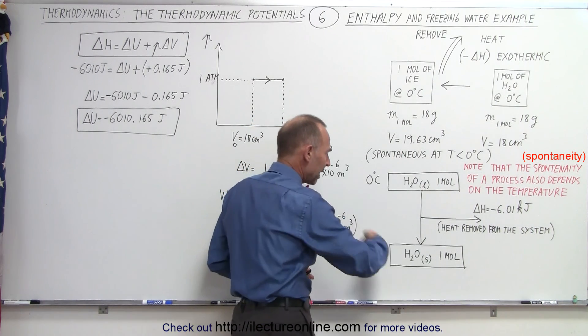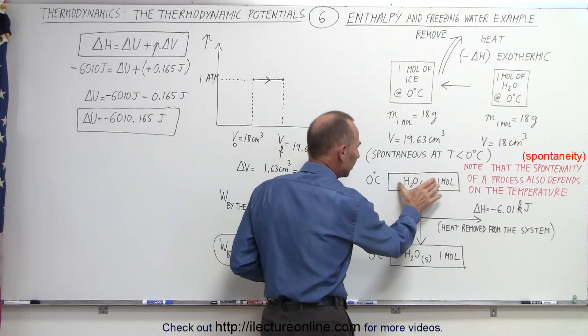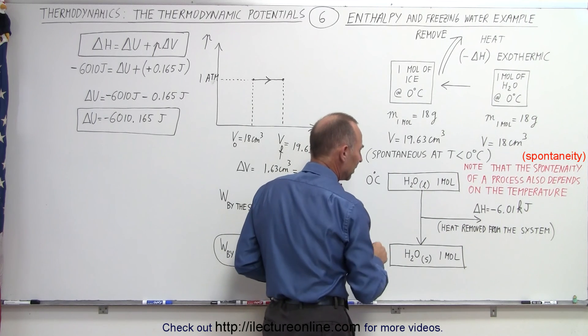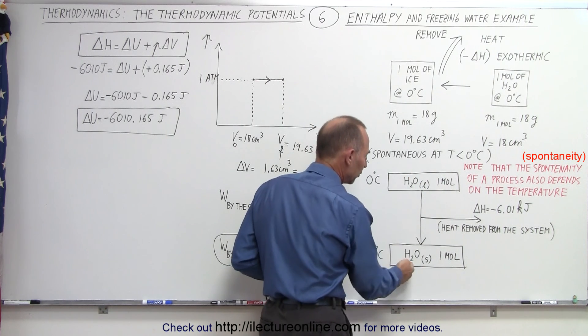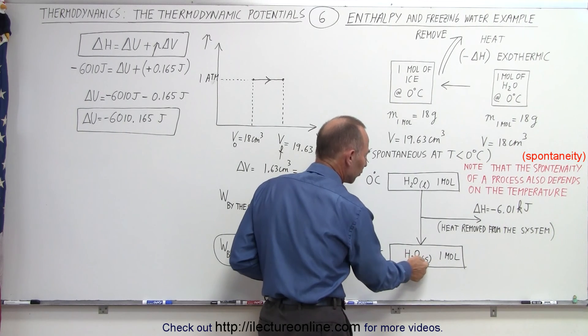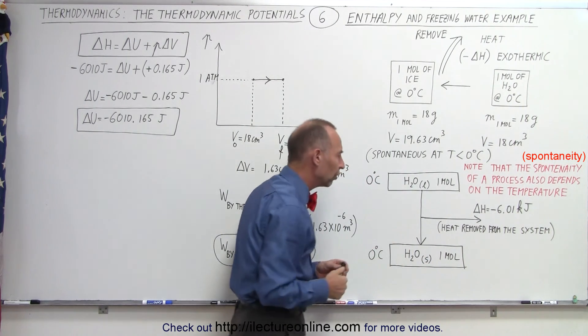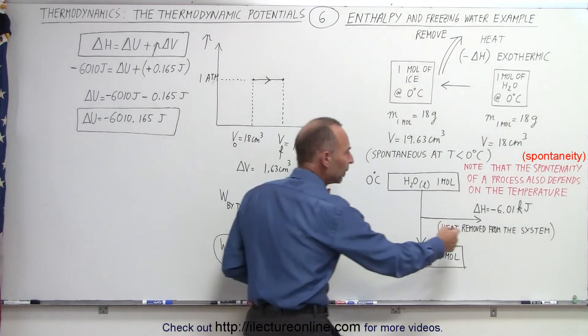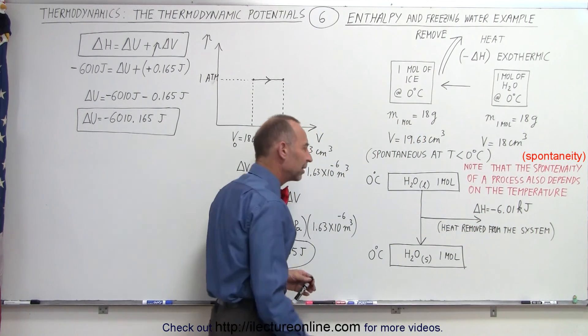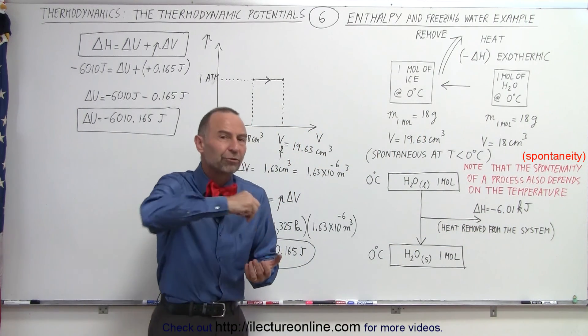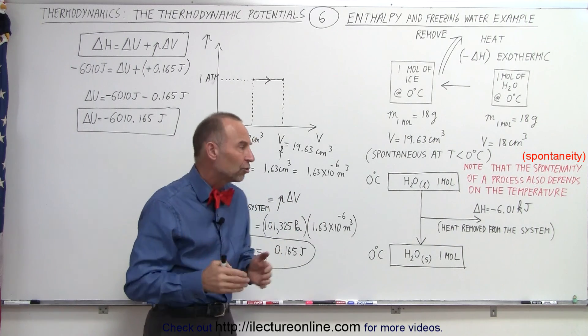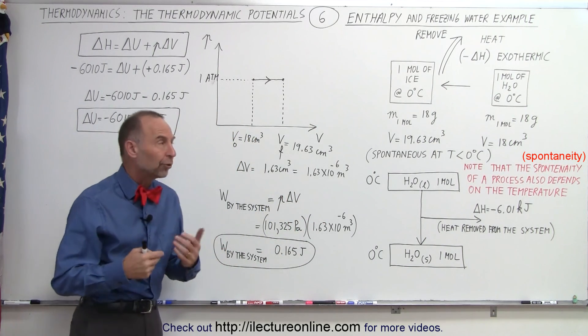So here we can take a look at this schematic. We start with 1 mole of water, water liquid state, so H2O in liquid state, and we turn it into 1 mole of ice, so solid water, H2O in a solid state, by removing 6.01 kilojoules or 6,010 joules. So heat is removed from the system, delta H. The change in enthalpy is therefore negative.